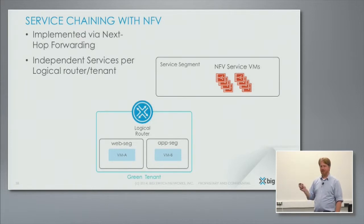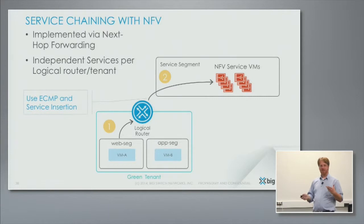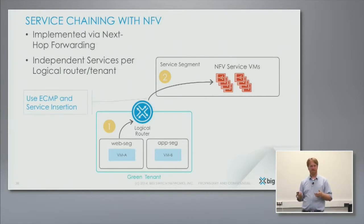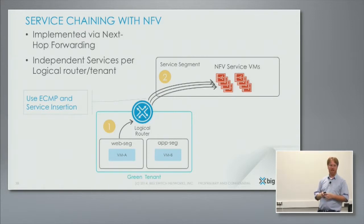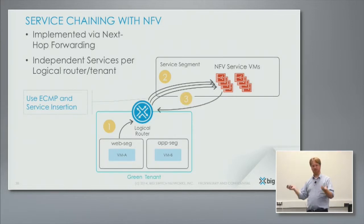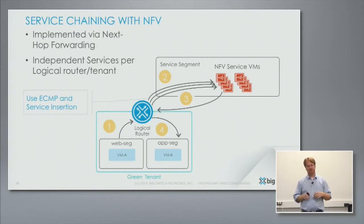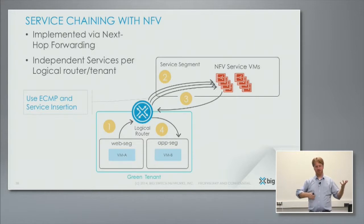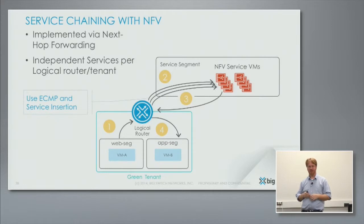The really interesting thing here is you don't have to route to just one thing. You can actually leverage some of the ECMP bits of the hardware and route to a whole cluster of VMs — think of it like a poor man's load balancer. They all have the default route back to the logical router and the router goes on to the destination. So you can imagine deploying a hardware traditional load balancer or traditional firewall, or deploying a whole bunch of service VMs.